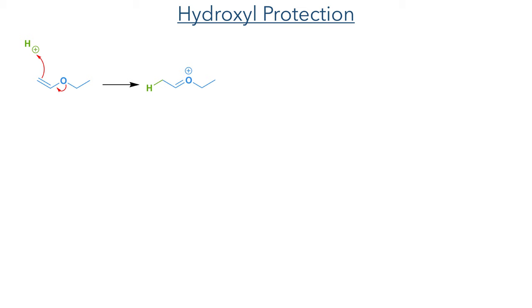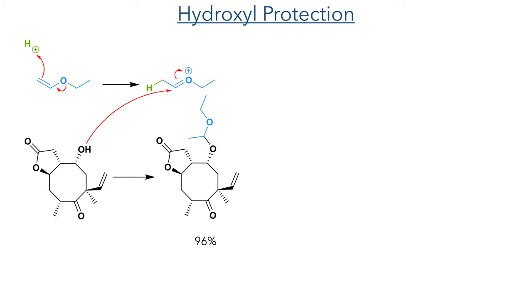With this hydroxyl group now installed with the correct stereochemistry, they then protected it using an ethoxyethyl group. Protonation of ethyl vinyl ether produces an oxonium intermediate, which undergoes attack from the hydroxyl group to produce the acetal in a 96% yield.